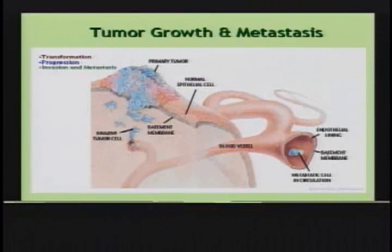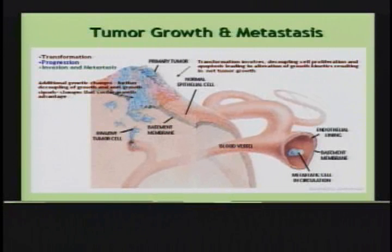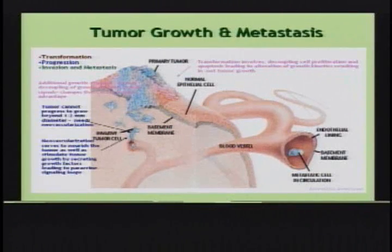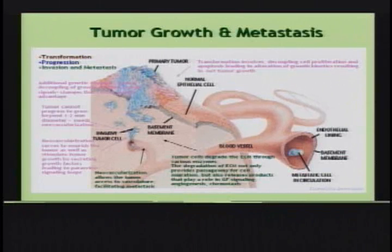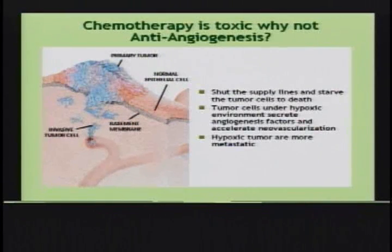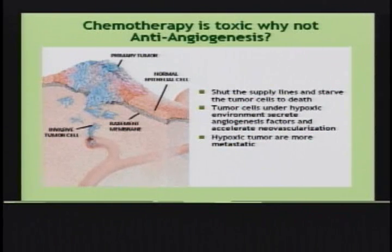A quick primer on cancer biology: you need the process of transformation to occur with tumor cells, and then for progression you need new blood vessels that not only bring nutrients to the primary tumor cells but enable these tumor cells to escape, leading to invasion and metastasis. These three pieces need to be thought of holistically. Chemotherapy is toxic, and anti-angiogenesis therapy — as Judah Folkman proposed — involves not only targeting tumor cells directly but attacking the supply lines of the tumor cells, like what Napoleon did, thereby starving these tumor cells.